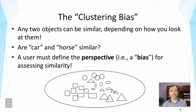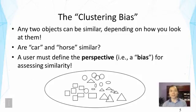In general, any two objects can be similar depending on how you look at them. For example, let's look at the two words 'car' and 'horse.' Are they similar? Well, it depends. If you look at the physical properties, they are very different. But if you look at them functionally, a car and a horse can both be transportation tools, so in that sense they may be similar. As you can see, it really depends on our perspective.